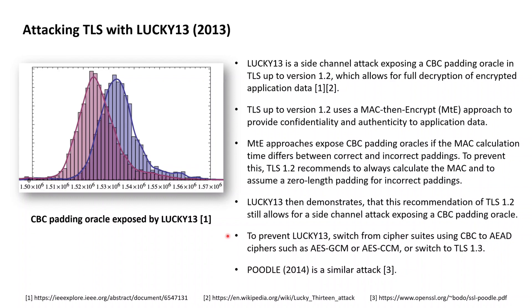Alternatively, Lucky 13 can be prevented by switching from TLS 1.2 to TLS 1.3, as within TLS 1.3 all ciphers used are authenticated encryption with associated data ciphers. As such, within TLS 1.3 neither the Mac-then-encrypt approach is used nor the CBC block cipher mode of operation.